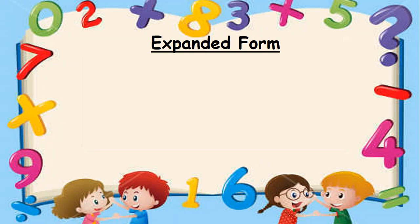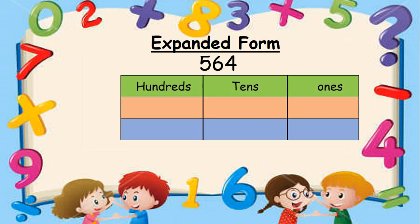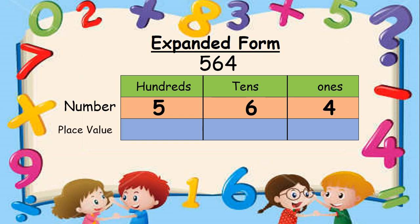Let us write the expanded form of the number 564. Step 1: we write the number 564 in the place value chart — number 5 in the hundreds place, number 6 in the tens place, number 4 in the ones place. Step 2: we find the place value of each digit. The place value of 5 is 500, the place value of 6 is 60, and the place value of 4 is 4.